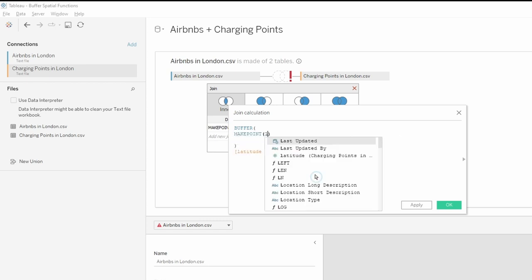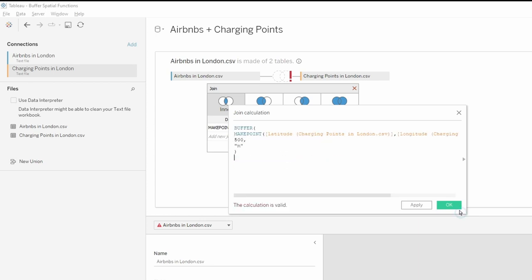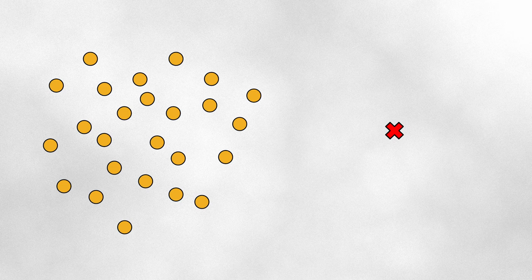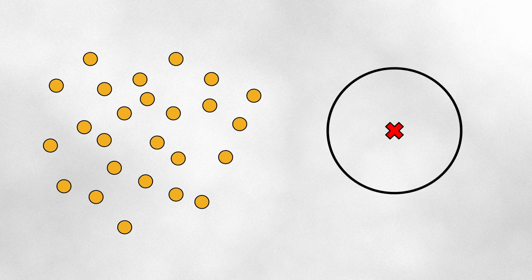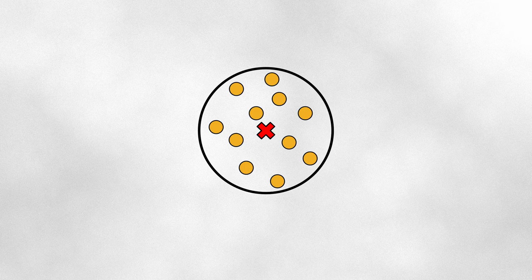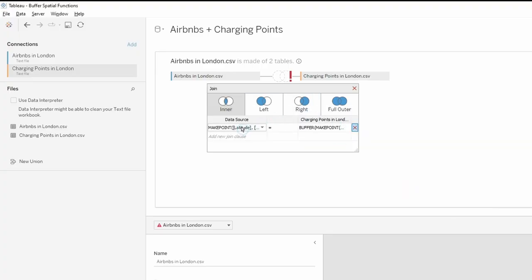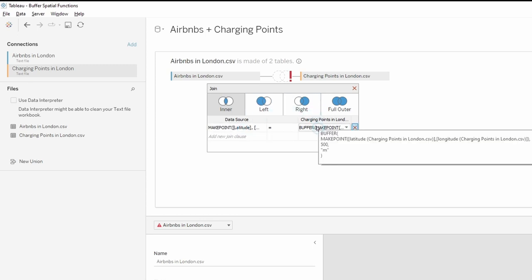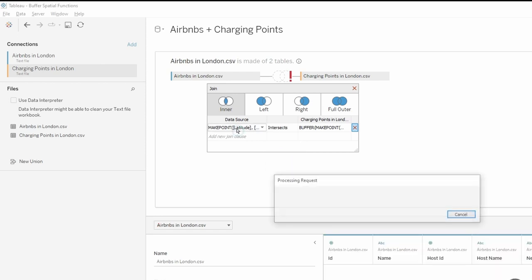Let's take a closer look at what's happening with the help of a few images. We have the spatial points of all the Airbnbs represented by yellow circles, and one example charging point represented by a red cross. We create a buffer around the charging point of a specified distance — in this case 500 meters. When the join takes place between the Airbnb points and the charging point buffers, some points will overlap with a buffer and others won't. Those points that fall outside of all buffers will be filtered out, and the other points will be kept for further analysis. So now I've got a point for the Airbnbs and the buffer around each charging point, and we can pick the intersect spatial join.